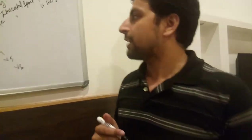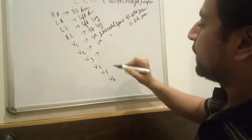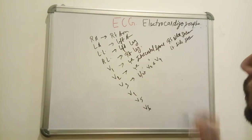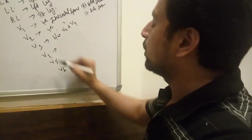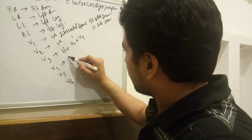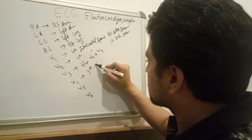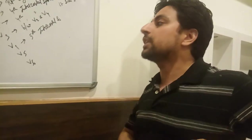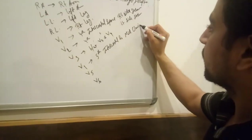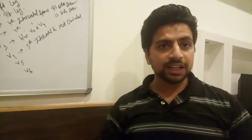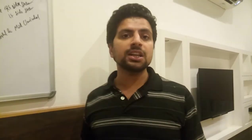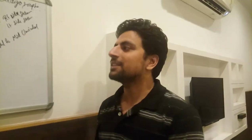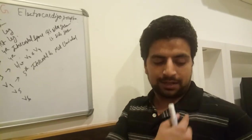V3 is placed between V2 and V4. V4 is placed at the fifth intercostal space on the mid-clavicular line. It is very important to know the correct electrode placement. I have seen many people place electrodes by experience alone, but we must know the mid-clavicular region precisely.